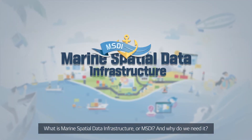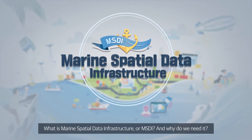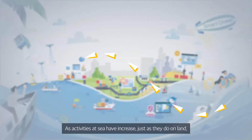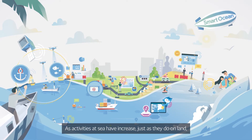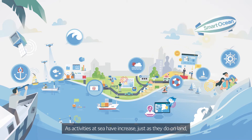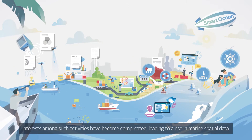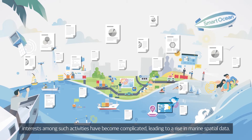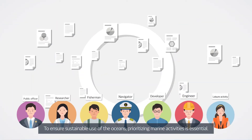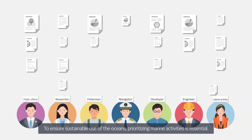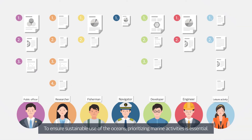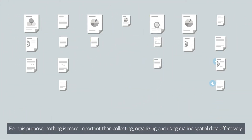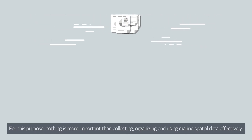What is Marine Spatial Data Infrastructure, or MSDI, and why do we need it? As activities at sea have increased, just as they do on land, conflicts among such activities have become complicated, leading to a rise in marine spatial data. To ensure sustainable use of the oceans, prioritizing marine activities is essential, and nothing is more important than collecting, organizing, and using marine spatial data effectively.